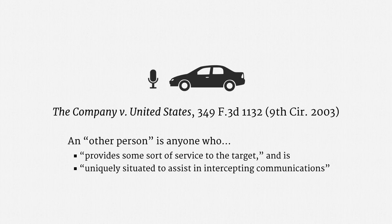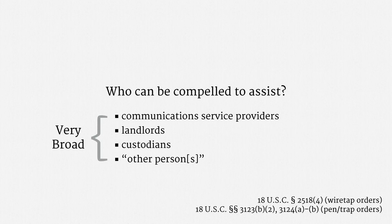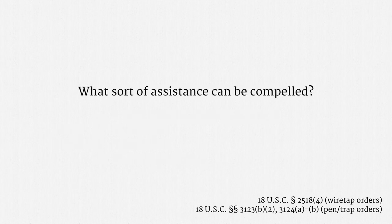The panel also concluded that the car manufacturer counted as a communications service because, even though it outsourced the system's cellular network, it still was closely linked to the service. So that's the story on who can be compelled to assist. The ECPA authority is very broad. Now that we've covered who can be compelled, let's cover the logical next question: what sort of assistance can be compelled?